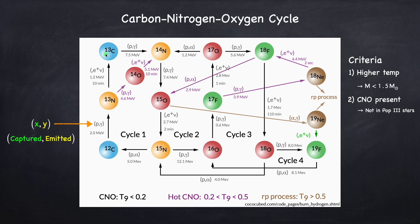If we start at carbon-12 and go around the first cycle, we're capturing four protons and eventually emitting an alpha particle. So we've converted four protons into an alpha — and this is hydrogen fusion. When we combine all of these cycles together, it turns out that the beta decay of oxygen-15 to nitrogen-15 is the bottleneck of the full cycle. So this interaction is ultimately what limits the CNO cycle rate.